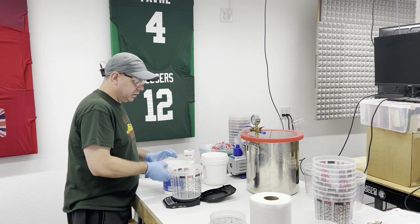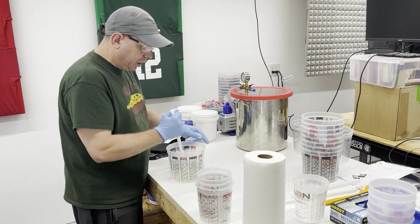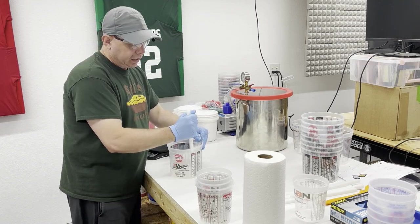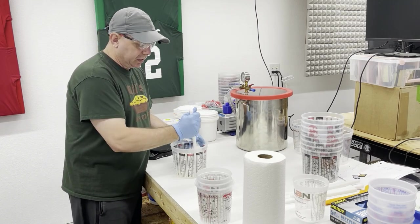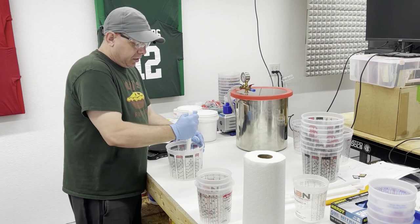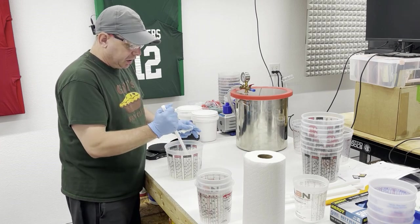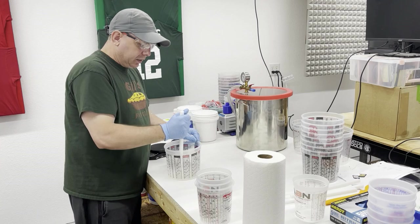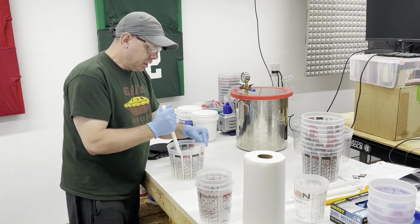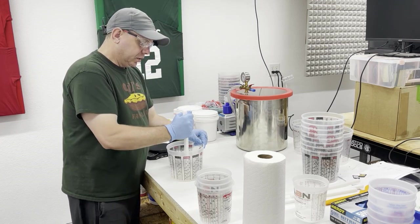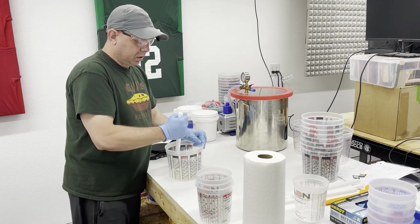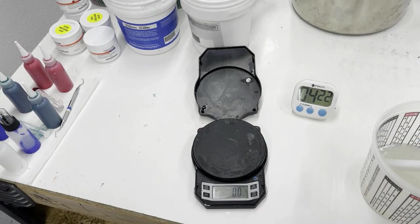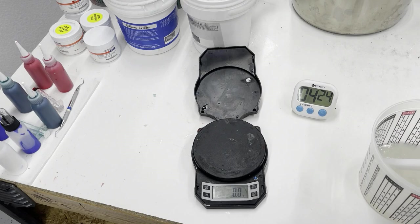We are going to degas this, so I can stir as fast as I want or whatever. I can introduce bubbles. I'm still going to degas it, but if you're not going to degas it and you're going to have something that's going to go in the pressure pot, then stir slowly. I have 35 minutes to work with this stuff, so I've been stirring this for a little over four minutes.